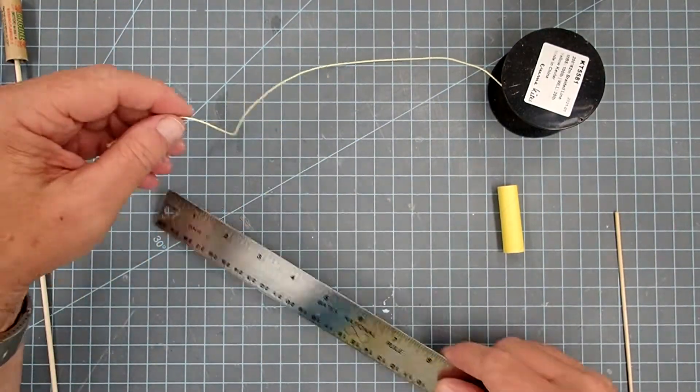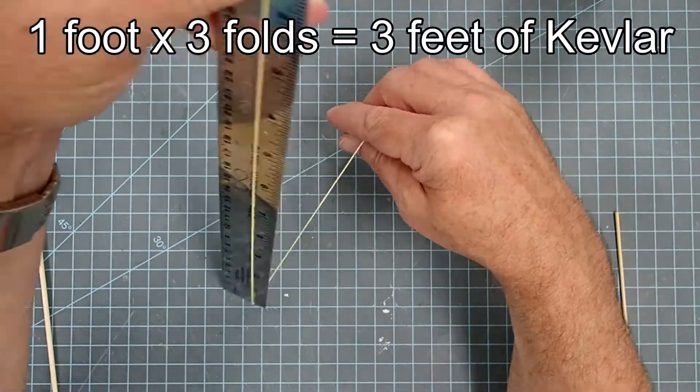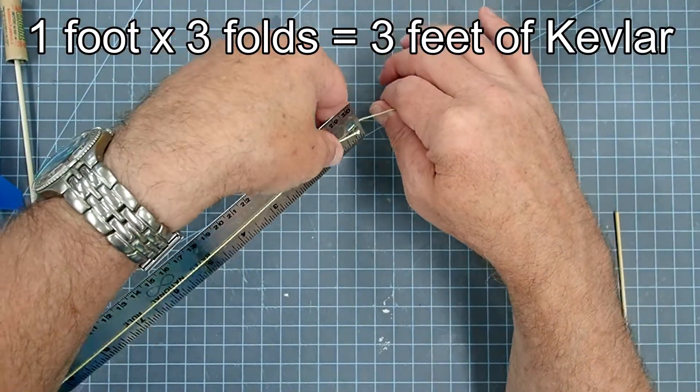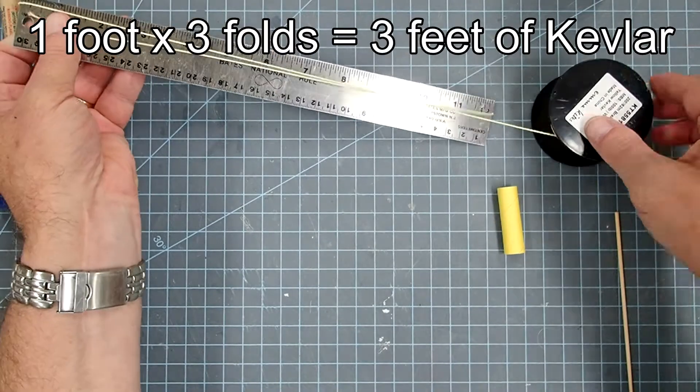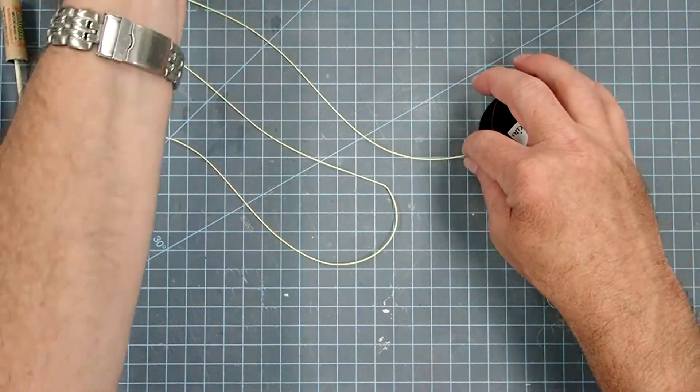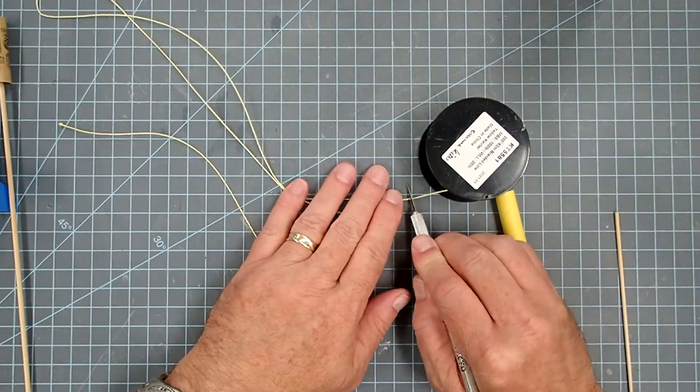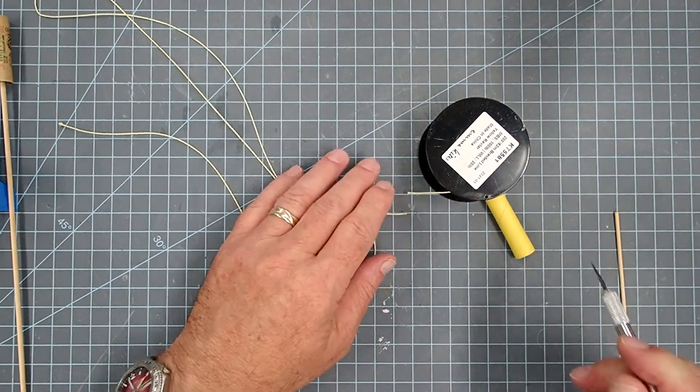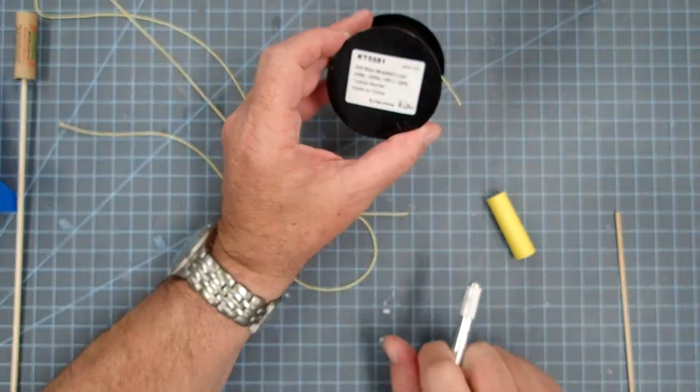I'm going to get myself one foot of Kevlar line here. There are several rocketry retailers online that sell this in small amounts. You can also just go on to places like Amazon. This is actually made for kite flying.